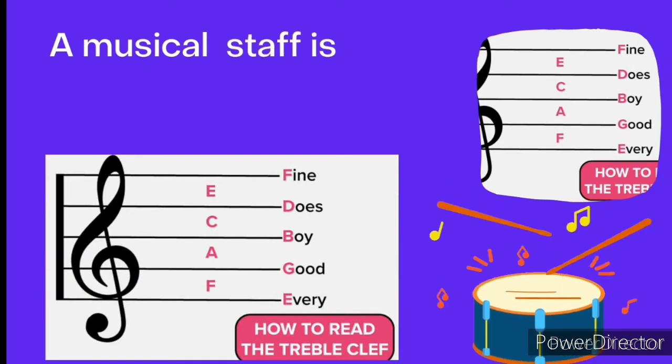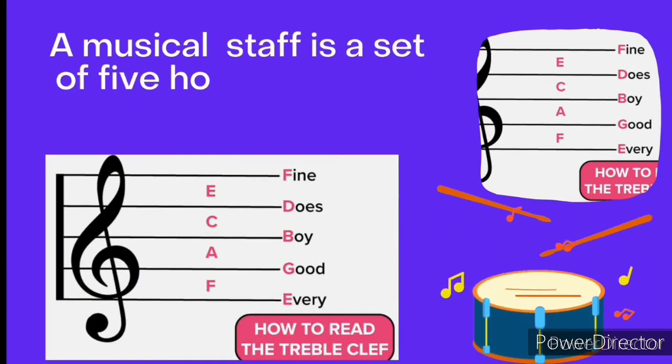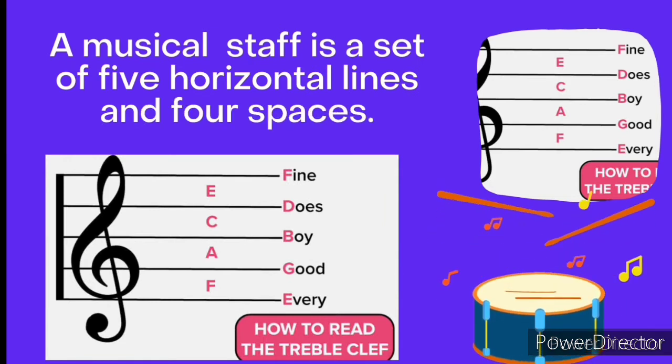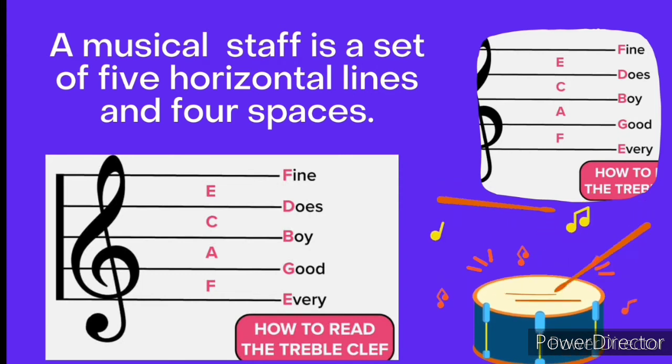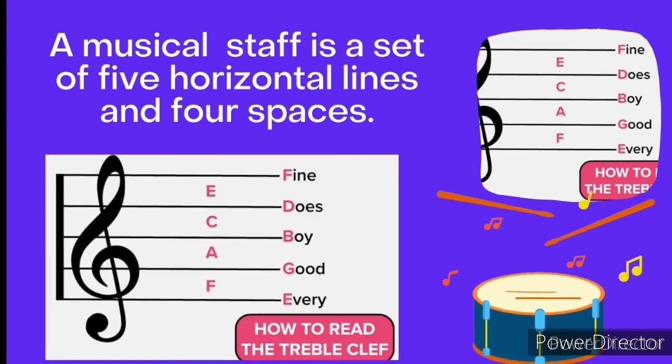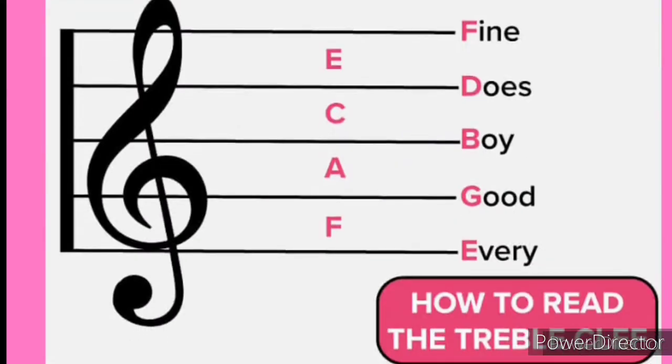A musical staff is a set of five horizontal lines and four spaces. We are going to be looking at this particular staff.